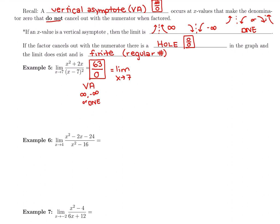Factoring the top, x squared plus 2x: it's a binomial, not a difference of two squares, but we can pull out a greatest common factor of x. So x times x is x squared, and x times 2 gives 2x — giving us x(x + 2). The bottom, (x − 7) squared, is already factored as (x − 7)(x − 7). We still have x minus 7 in the denominator, and 7 minus 7 is 0, so nothing cancels — it is a vertical asymptote.